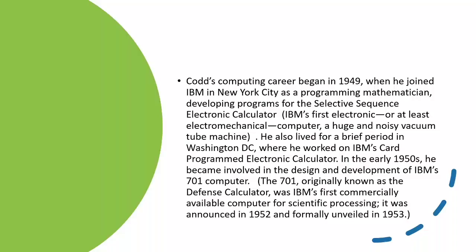Codd's computing career began in 1949, when he joined IBM in New York City as a programming mathematician, developing programs for the Selective Sequence Electronic Calculator.